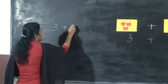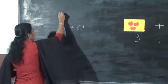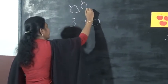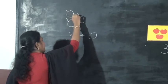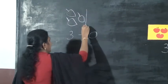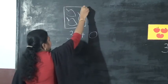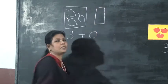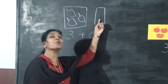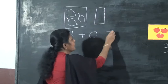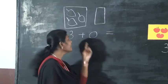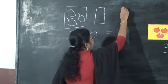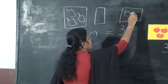Three plus zero. One, two, three. Three leaves are here in this box. Then the next box has no leaves at all, so zero leaves here. The answer is three — only three leaves are here. Answer is three. We draw only three leaves here.